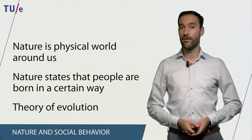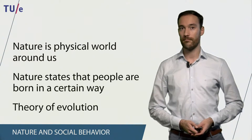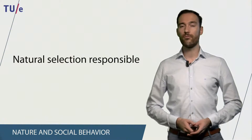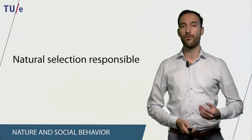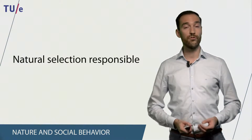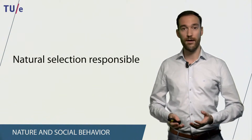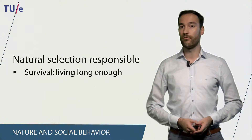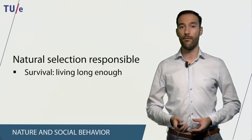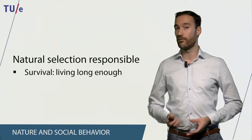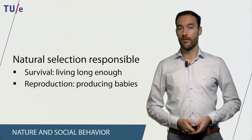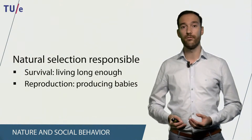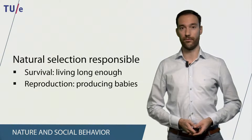There are many different theories used by people who think nature can explain human behavior. The most famous one is the theory of evolution. The theory of evolution depends on natural selection, which is responsible for allowing certain traits to survive while other traits do not. For example, traits that allow us to survive long enough to produce offspring are more likely to persist than traits that do not. Traits that allow us to reproduce and have babies that make babies of their own are also more likely to persist.